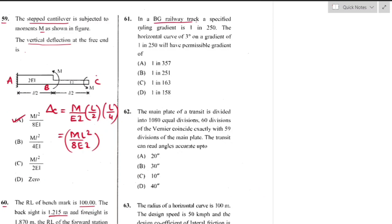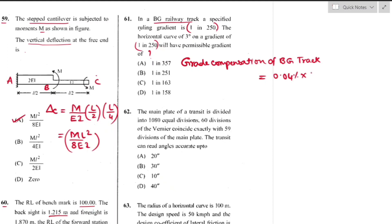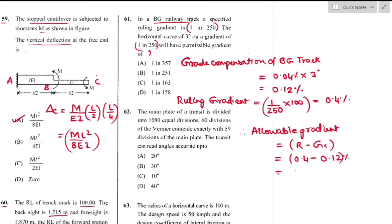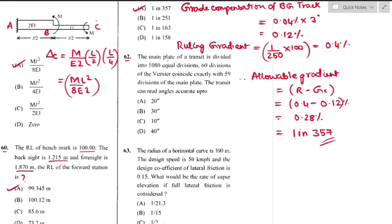Question number 61: In a broad gauge railway track with ruling gradient 1 in 250, a horizontal curve of 3 degrees requires grade compensation. Grade compensation for broad gauge = 0.04% per degree of curve, so 0.04% × 3° = 0.12%. Ruling gradient = 0.4%. Allowable gradient = 0.4% − 0.12% = 0.28% = 1 in 357 — option A is the right answer.